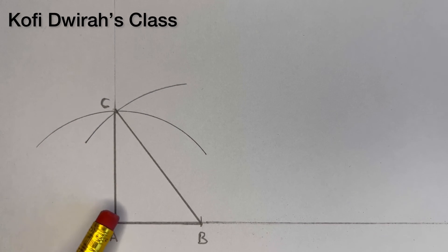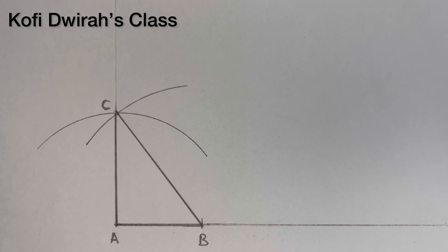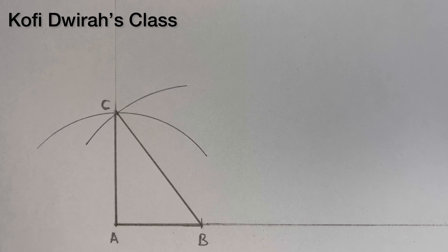Then you draw line AC and line BC to get your right-angle triangle and the angle here is 90 degrees. Thank you very much for coming to this class today. This is Confucius class. Please if you are new to this class, please subscribe and be part of this class. Thank you very much for your support. Please share this video — without drawing there will be nothing on this planet. Let's keep on drawing to keep the world moving. Thank you very much, I will see you in my next class, bye bye.